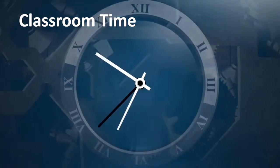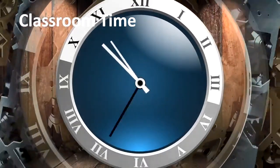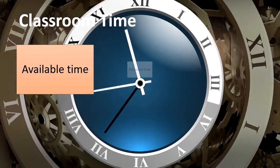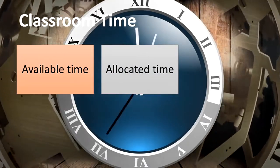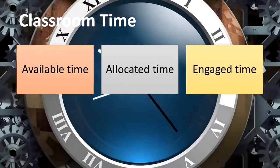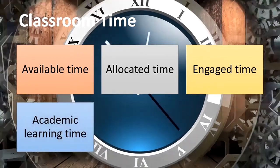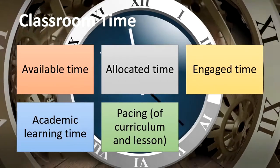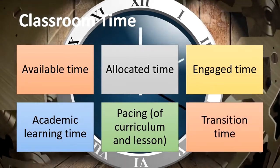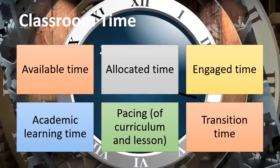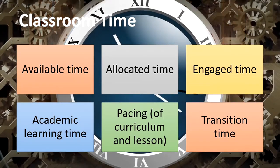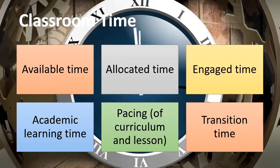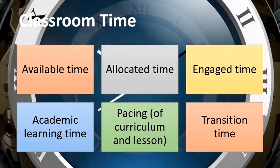When we talk about classroom time, we come across different types of time: available time, allocated time, engaged time, academic learning time, pacing time — when we pace our class and curriculum — and transition time. Before planning for effective use of time, let us discuss what these different types of time are and how we can use them effectively in our classroom.